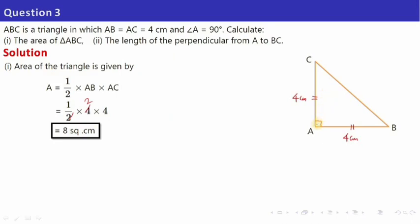The second part of the question asks: find the length of the perpendicular from A to BC. From A, draw a perpendicular on BC — call it AD. We need to find AD. Before that, let me find BC. Because if you want to find the height, you must know the base. Base, that is BC, has to be calculated.